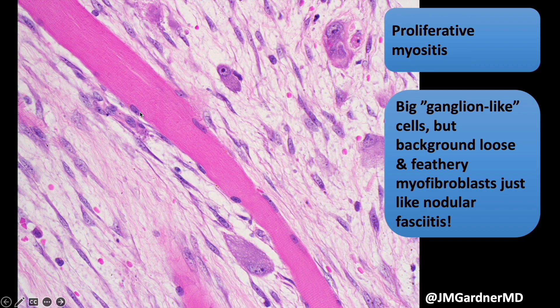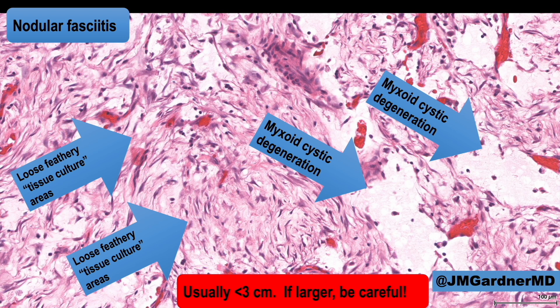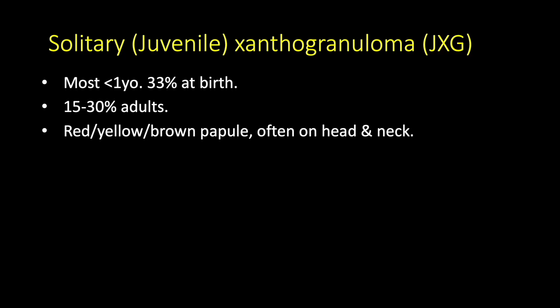You can see the splayed-apart skeletal muscle in this case of proliferative myositis, with the loose fasciitis-like background in between — a great example where the outlines of the original skeletal muscle bundles are still there but individual fibers are separated by fasciitis and ganglion-like cells. The muscle bundles are spread apart by a fasciitis-like background, creating a quilt-like pattern that is really helpful diagnostically. Here's another nodular fasciitis case — not quite as myxoid, a little washed out — but again showing beautiful cystic breakdown, feathery tissue culture areas, and extravasated red cells.